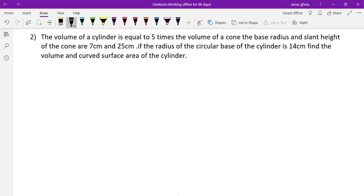This question is from surface area and volume. Volume of a cylinder is equal to 5 times the volume of a cone. They give radius and slant height for the cone - base radius is 7cm.